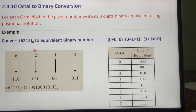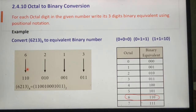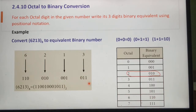Here our given octal number is 6213 to the base 8. Our first octal digit is 6; its equivalent binary number is 110, that is written here. Next octal digit is 2; its binary equivalent is 010, that is also written here.